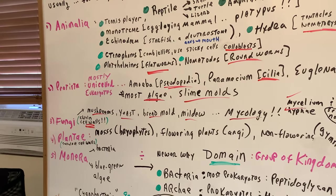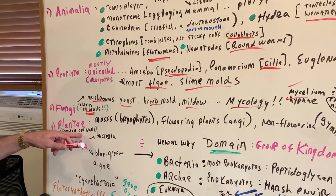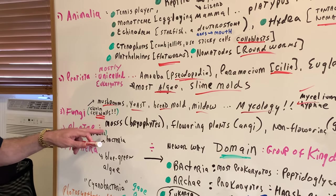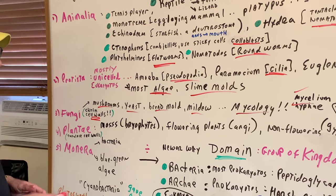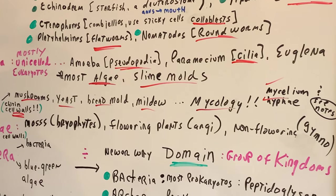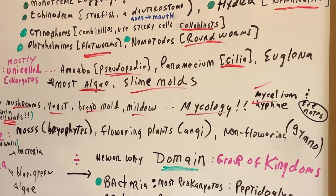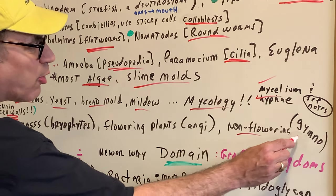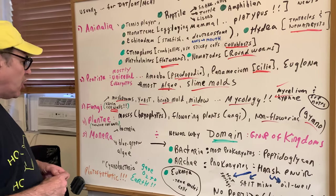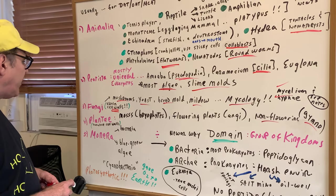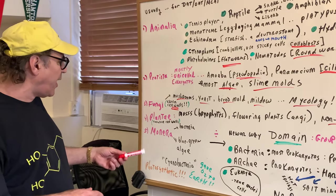How about Kingdom Plantae? That's an easy one — you've got the word plant. Cellulose is in their cell walls. They include the bryophytes, which are the mosses. Flowering plants are the angiosperms, which include fruits and flowers. Non-flowering plants are the gymnosperms. So if I gave you a rose and asked what kingdom, that's obviously Plantae.